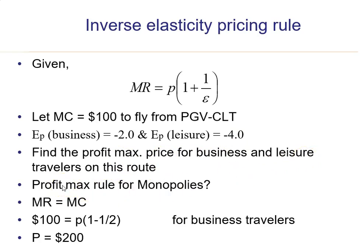To do this, recall the profit maximization rule for a monopolist: simply set marginal revenue equal to marginal cost. We've discussed this rule at length throughout this module — monopolists maximize profits where MR equals MC. From the inverse elasticity rule, MR equals P times (1 + 1/ε).